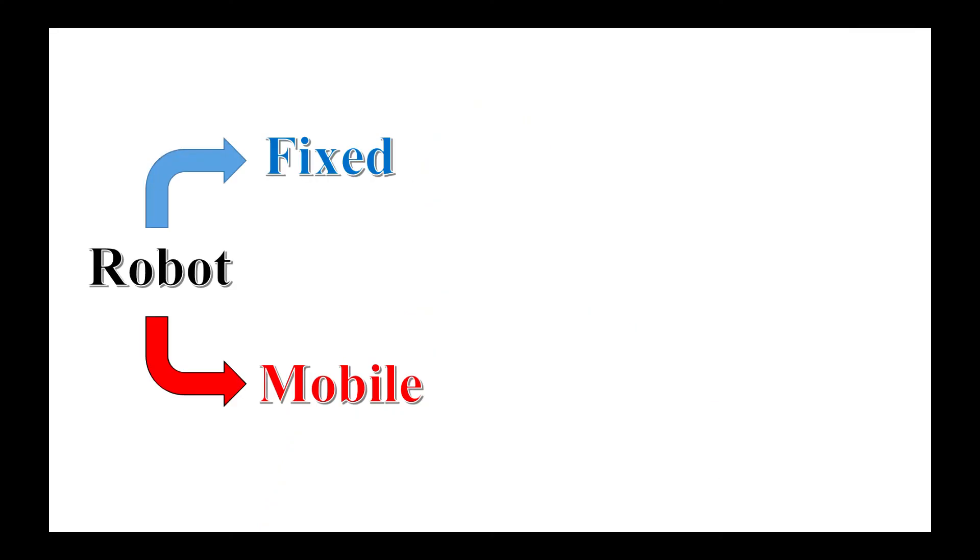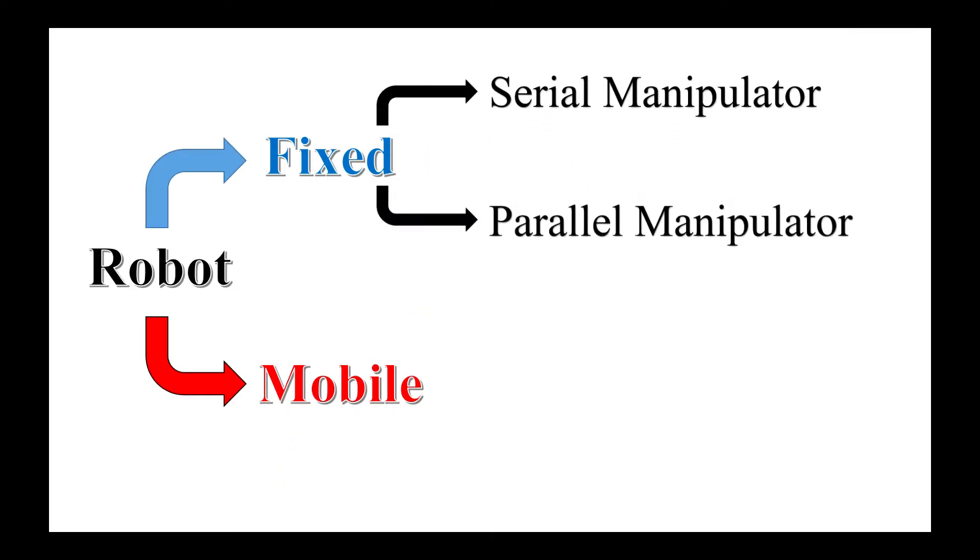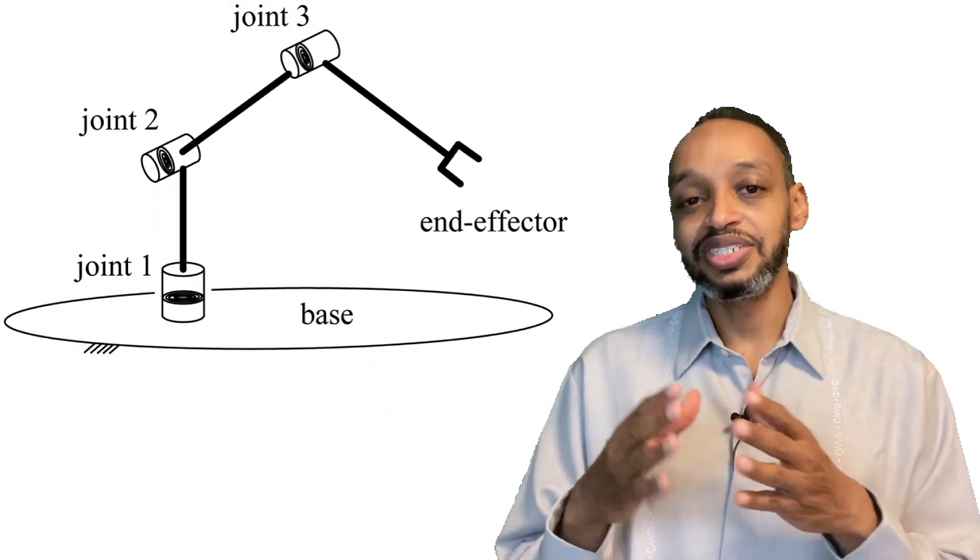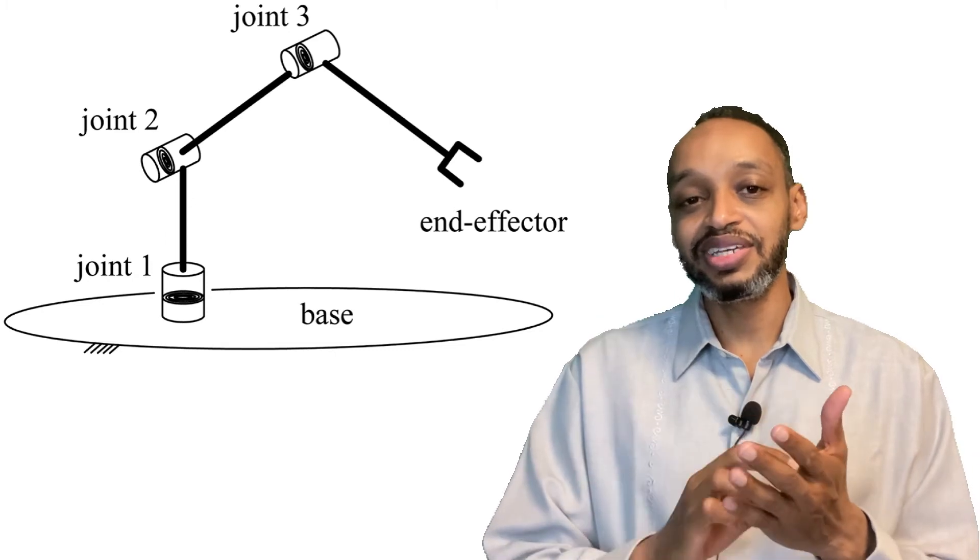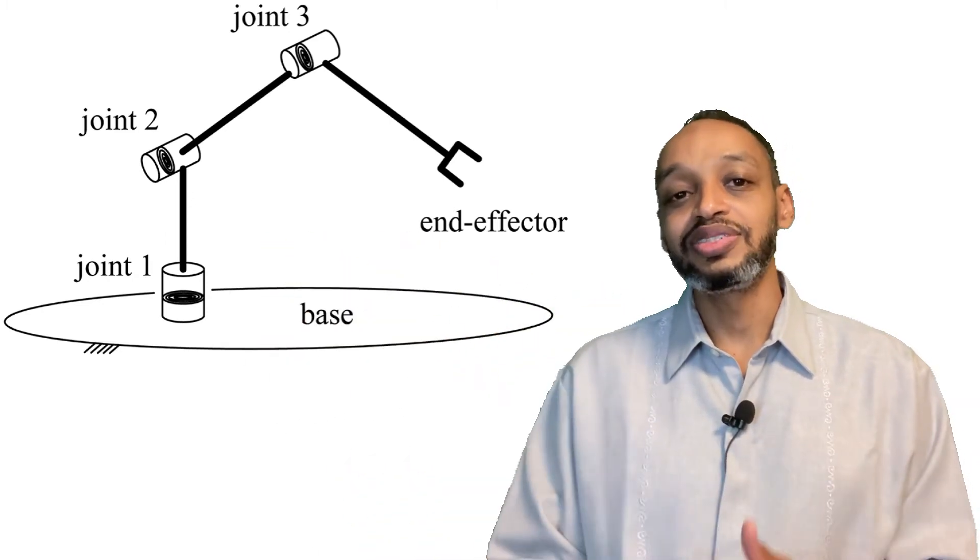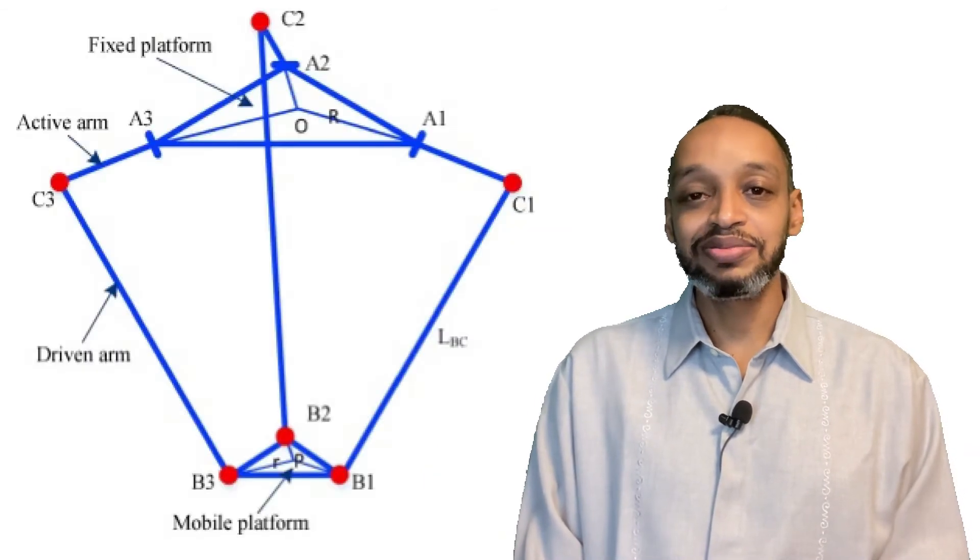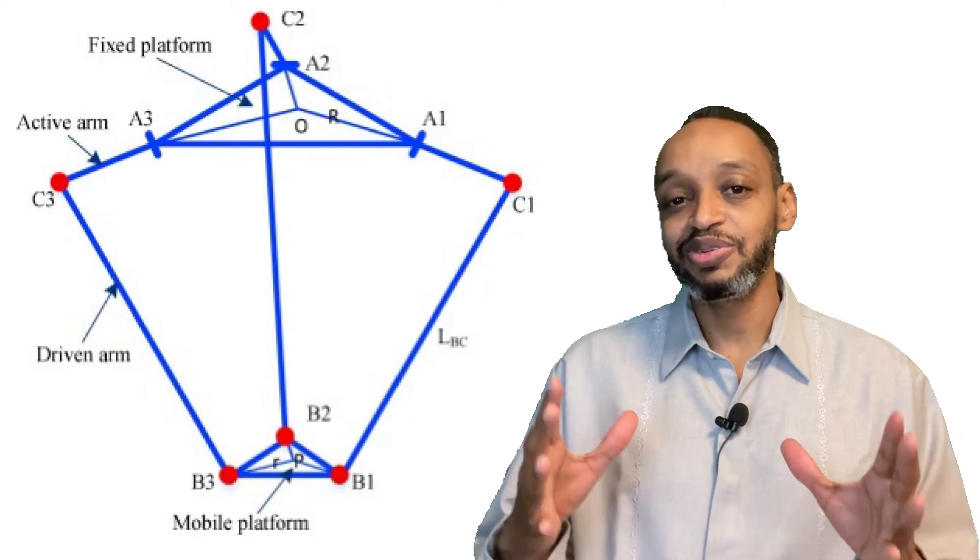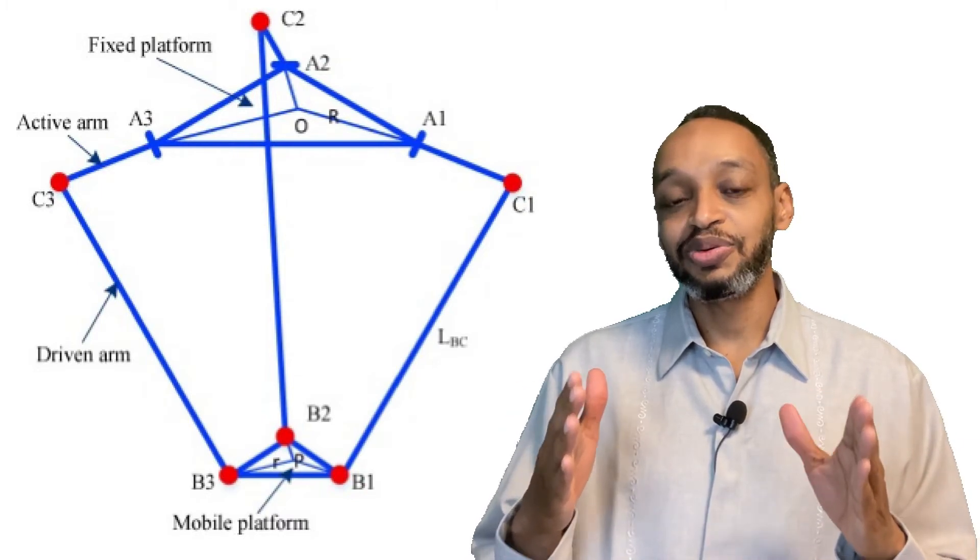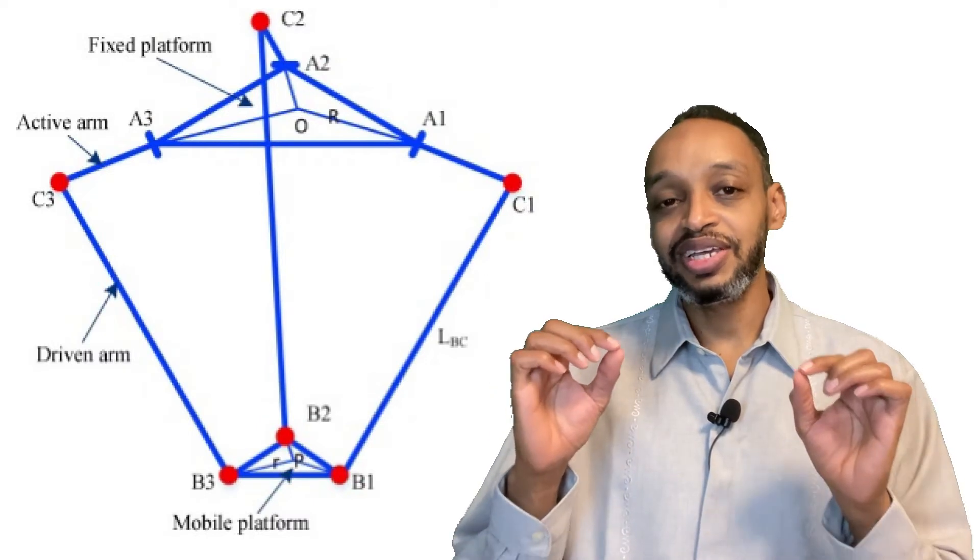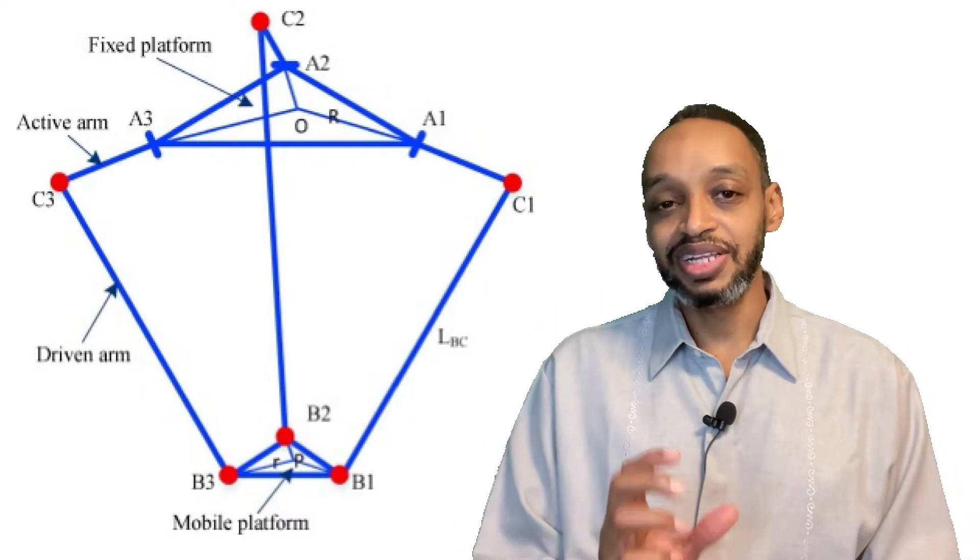Under even fixed robot we have two categories: serial manipulator or parallel manipulator. Mostly serial manipulator is the one widely used, which has all the links. You have a link, a joint, then a link, a joint, and so on until the end effector. But in terms of parallel mechanism or parallel robot, mostly in that case you have two links connected together, and they all end at one point.